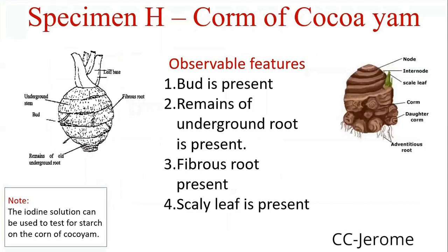Specimen G, corm of cocoyam. Observable features: nodes present, remains of underground roots present, fibrous roots present, scaly leaves present. Note: if you want to test for starch, iodine solution can be used to test for starch.